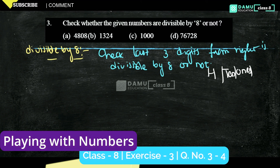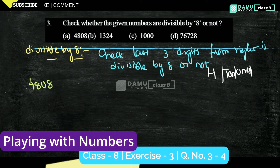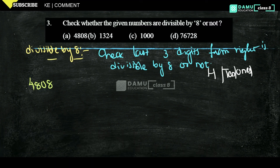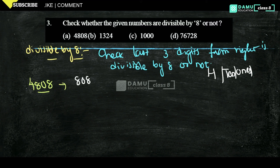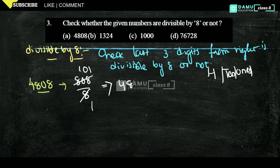We are going to start with the first one: 4808. What are the last three digits? They are 8, 0, 8. So let us check if 808 is divisible by 8. 8 ones are 8, so 808 is divisible by 8. Therefore, 4808 is divisible by 8.